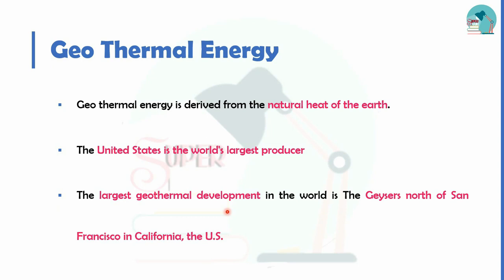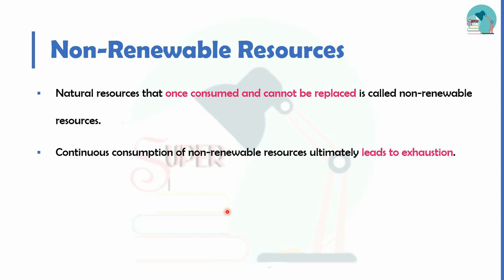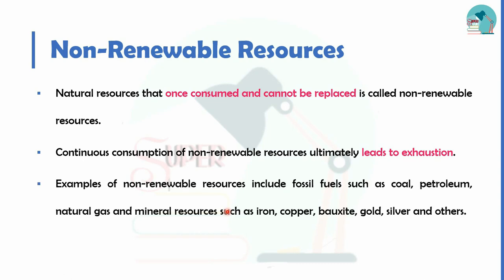So we have two types of natural resources: renewable resources and non-renewable resources. Renewable resources are replaced naturally when used. Non-renewable resources, once consumed, cannot be replaced easily. Examples of non-renewable resources include fossil fuels — coal, petroleum, natural gas — and mineral resources like iron, copper, bauxite, gold, and silver.